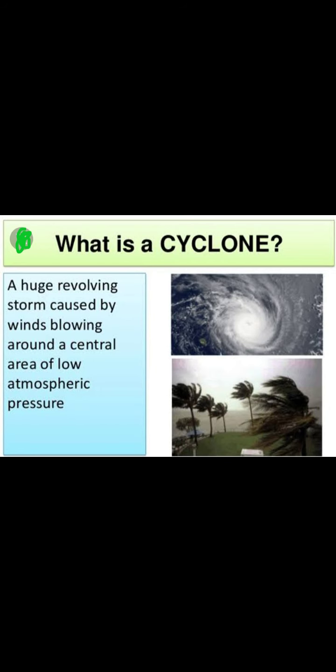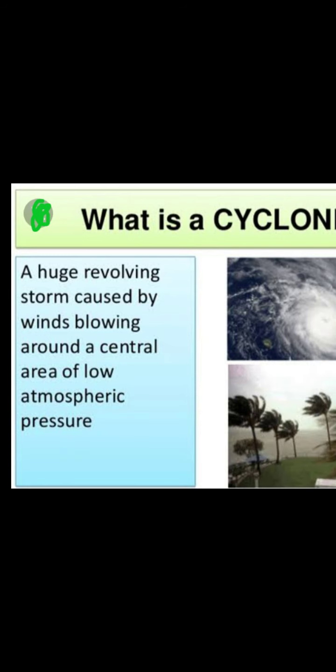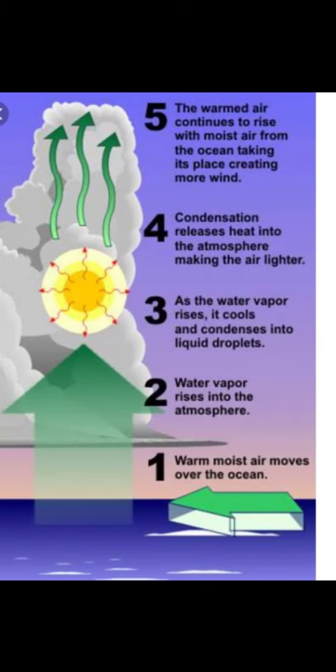A cyclone is a huge revolving storm caused by wind blowing around a center area of low atmospheric pressure. Cyclones happen when there is movement from high pressure to low pressure. Water evaporates and rises, then changes into condensation, forming a spiral shape — a cyclone. Cyclones are a great natural disaster for humans, causing shelter problems and sudden lifestyle changes in affected areas.